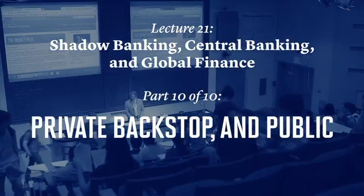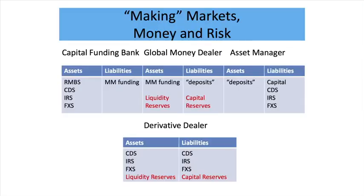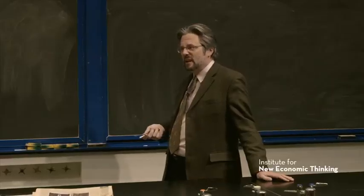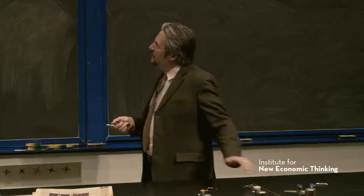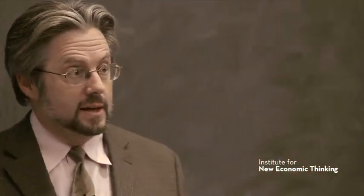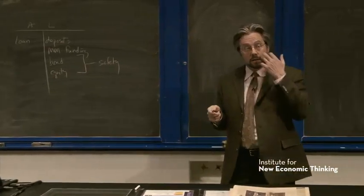Just two more slides. Focusing on the dealers now: if you don't want the central bank to be acting every day, you need to put some robustness into the dealers. You want some kind of liquidity reserves there, some kind of capital reserves — in particular down here with the derivative dealer, because that's the new one we haven't really experienced very much. The derivative dealer and global money dealer. The distinction between a match book dealer and a speculative dealer is helpful here.